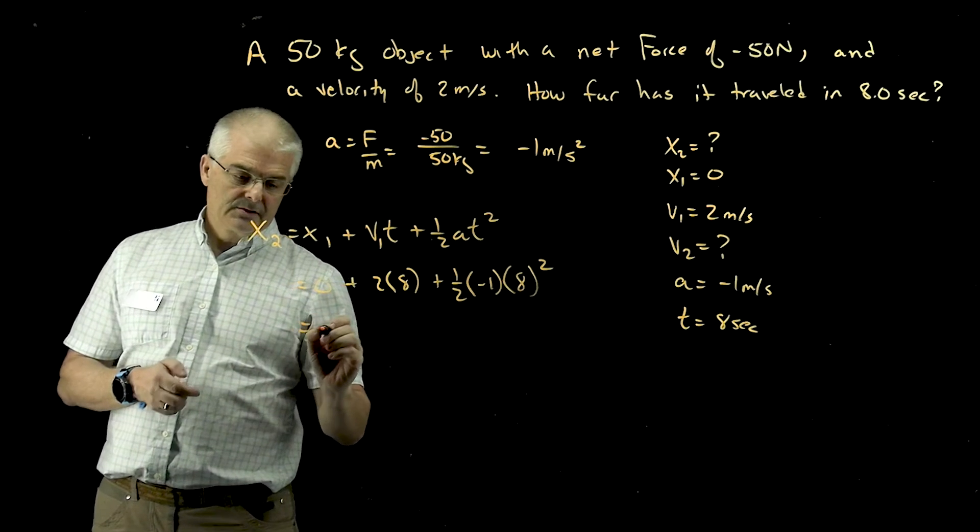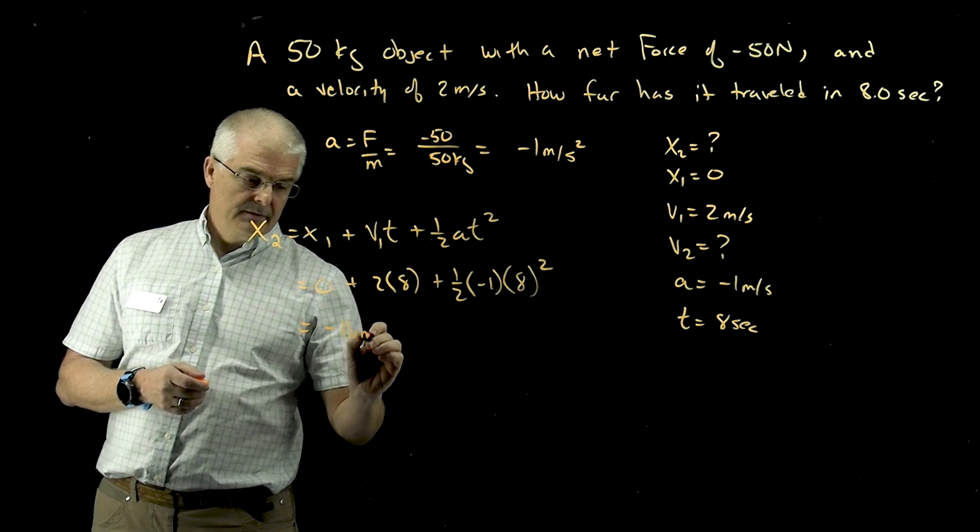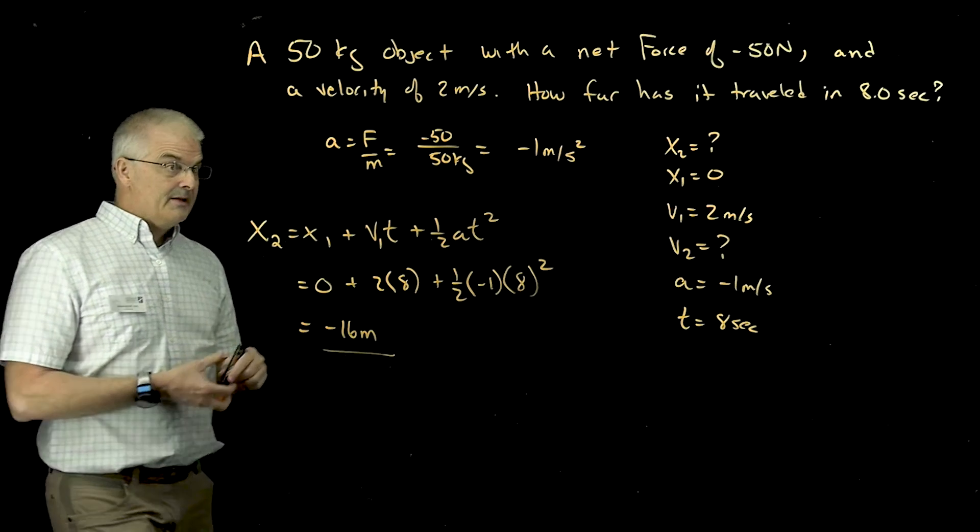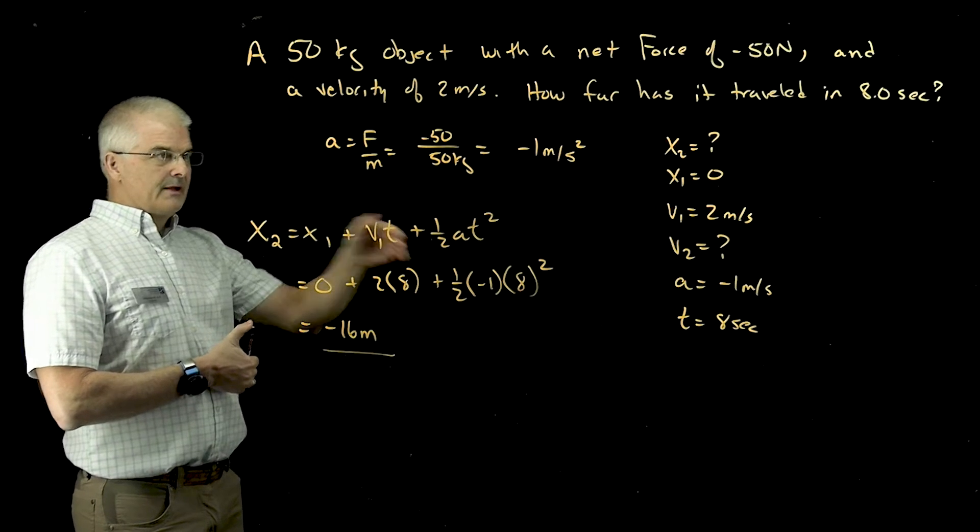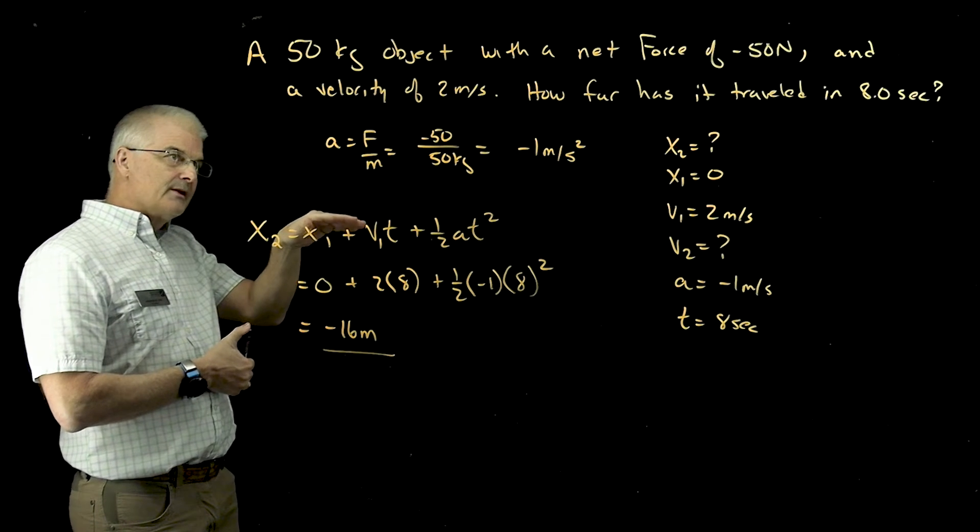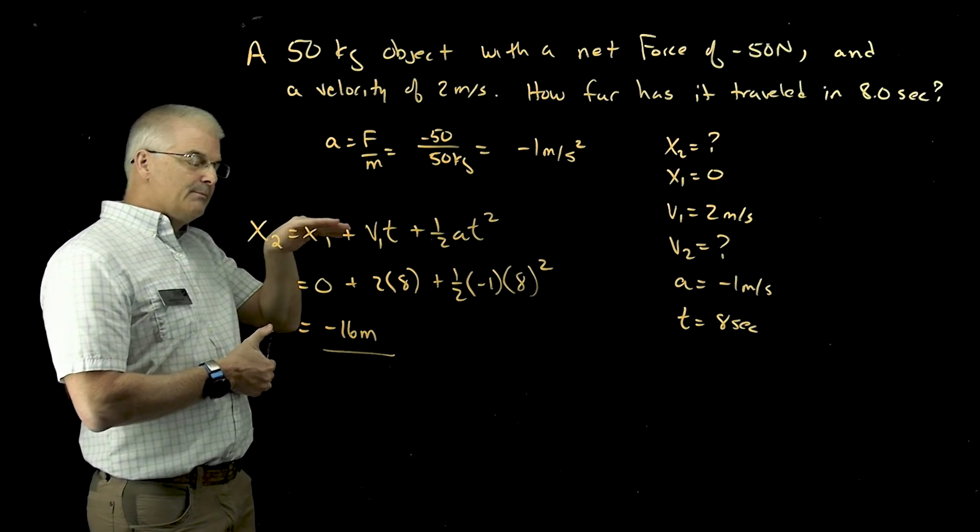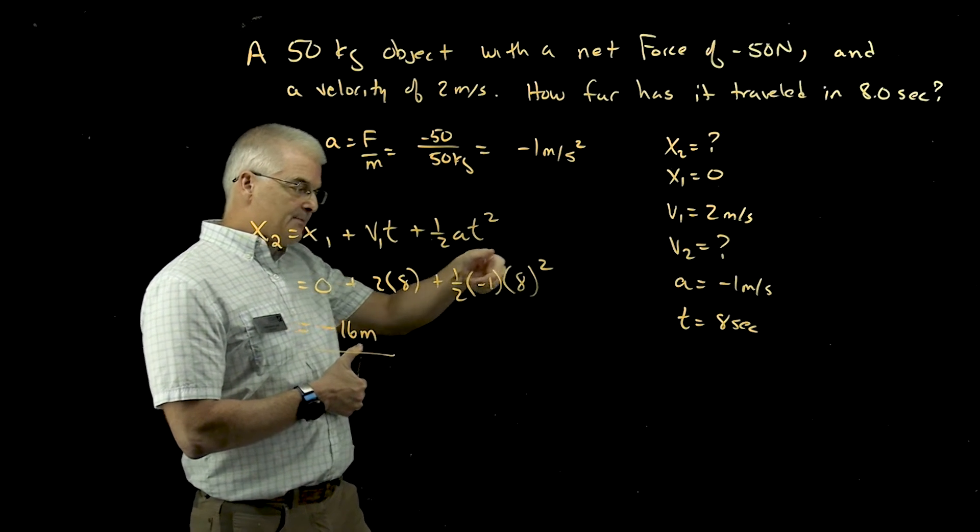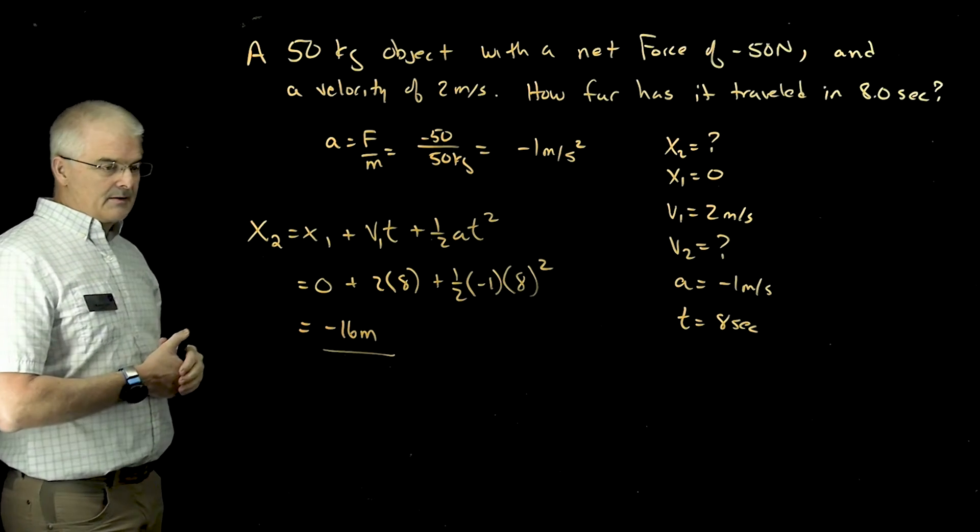And I get X2 equal to negative 16 meters. So that means you're starting at 0. Now it's moving in the positive direction at 2 meters per second. Because it's slowing down, it slows down, stops, and then starts to accelerate and comes back.